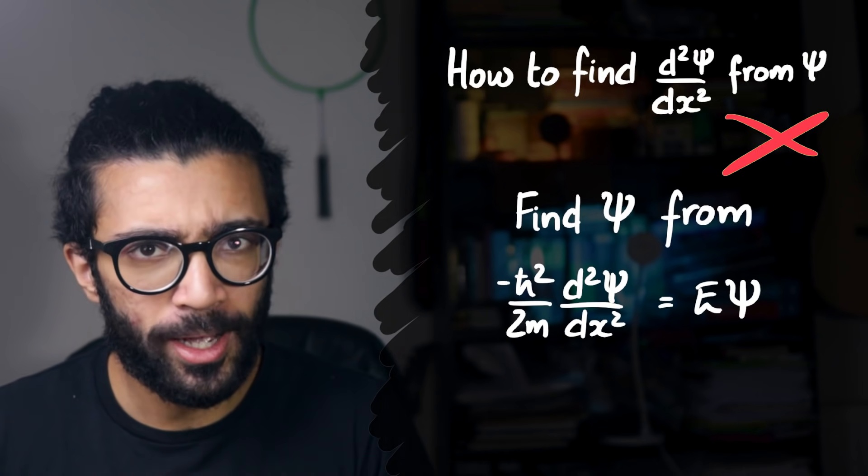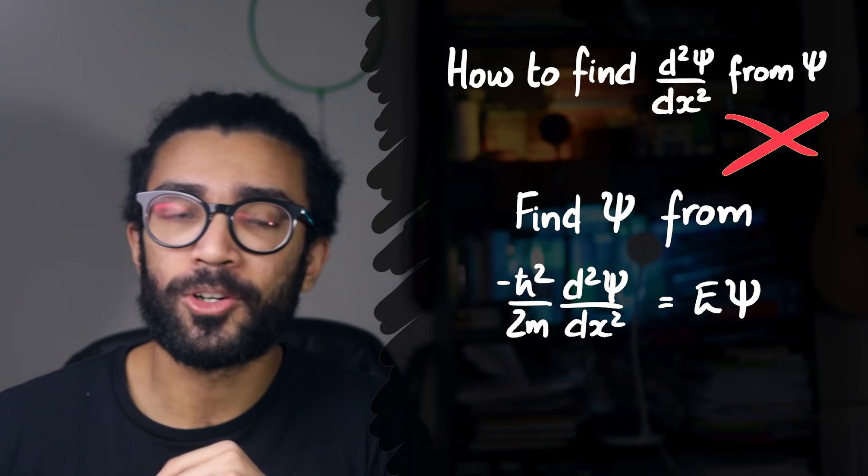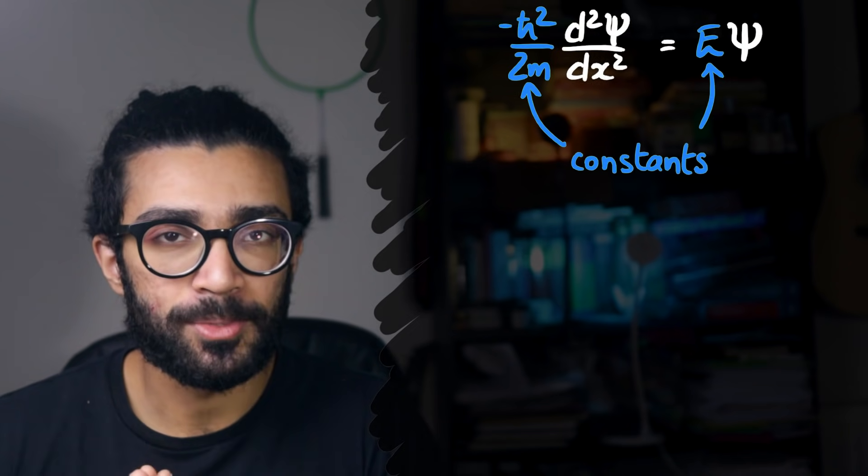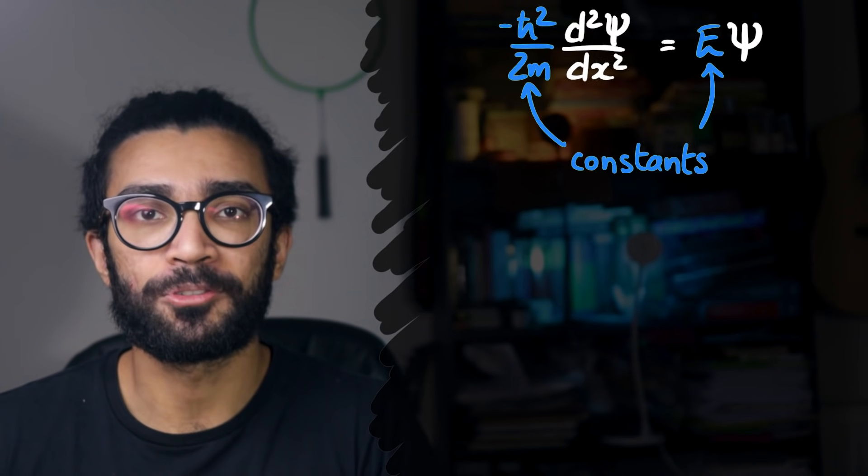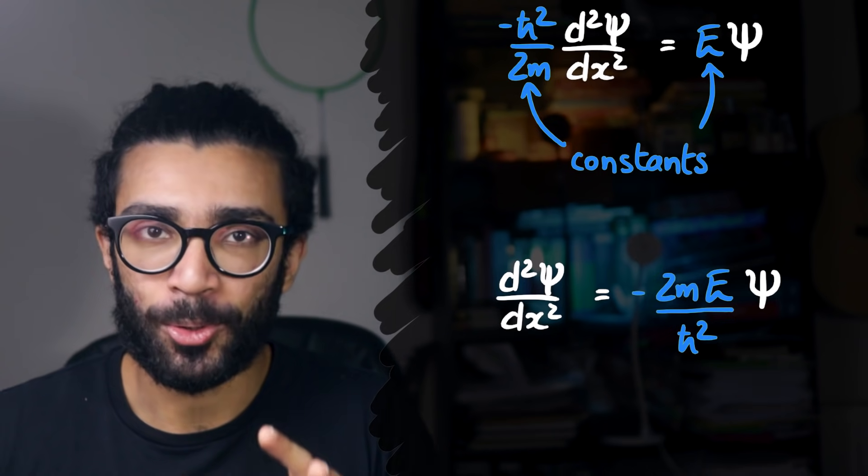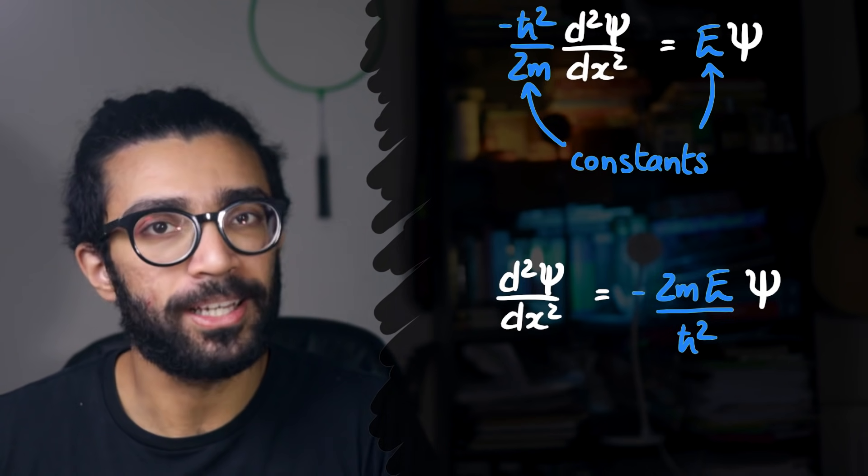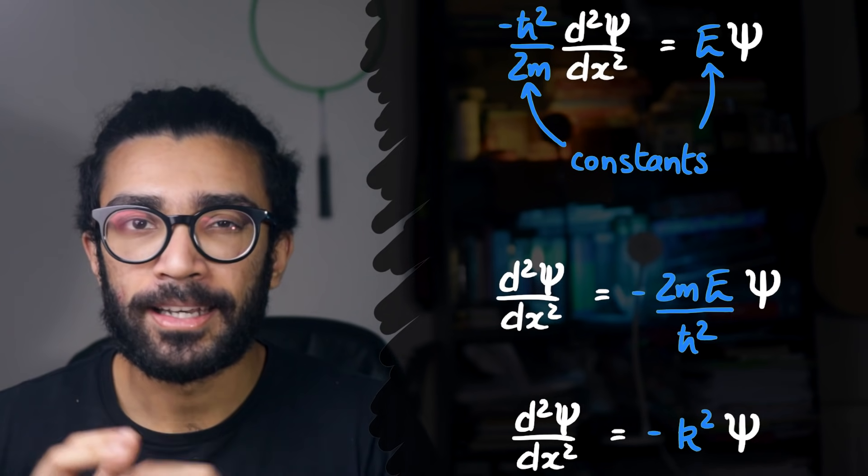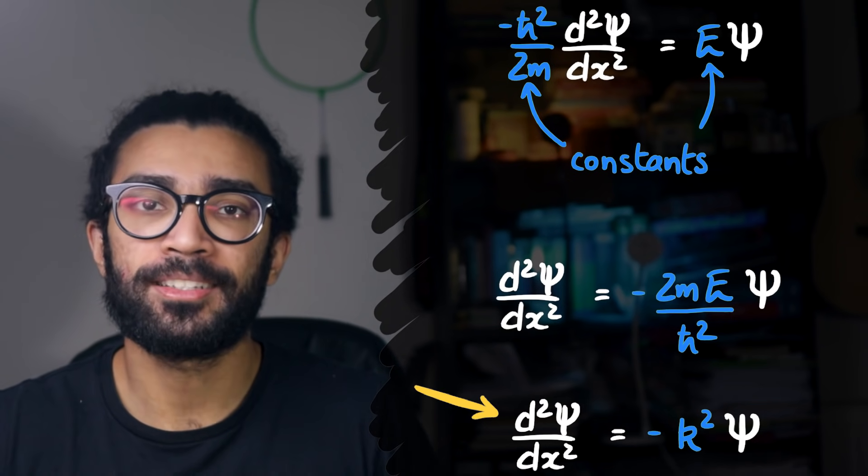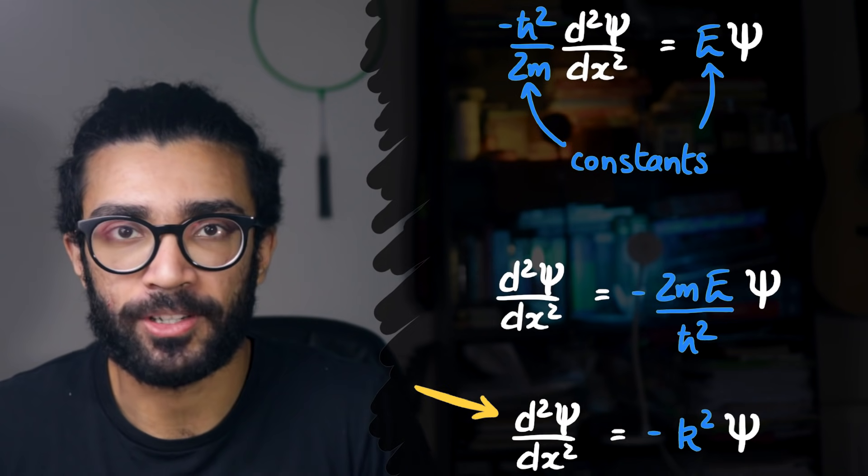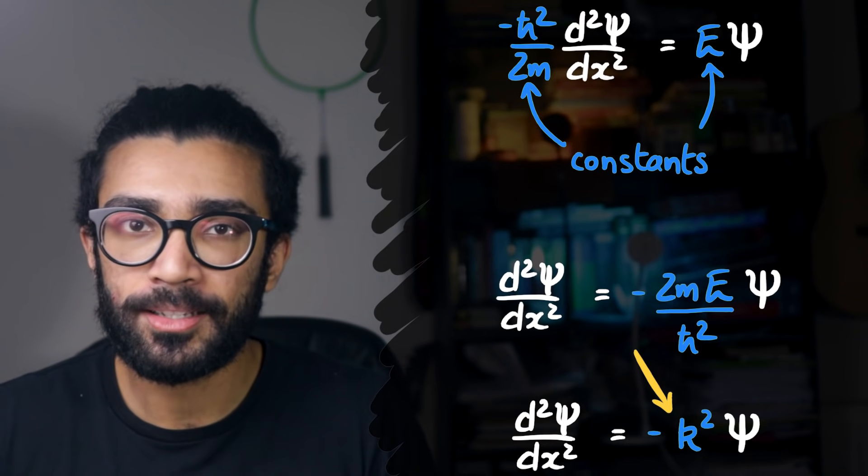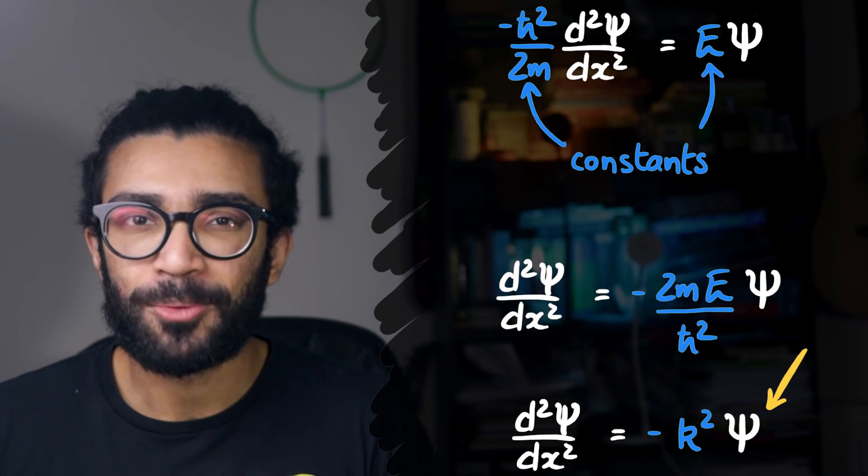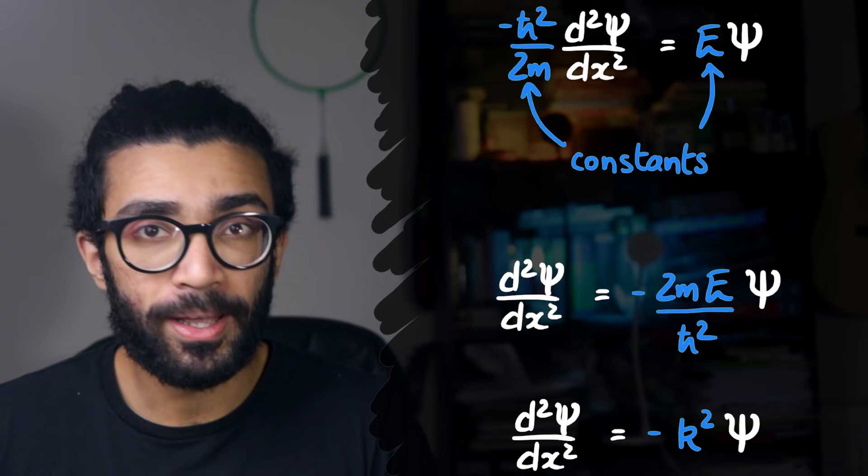But that's not the case here. We're trying to go the other way, which is much trickier. And we've got this e psi term to deal with as well. Luckily, however, all of these terms are constant, and we can rearrange our equation so that we're left with this. We can then combine all of the constants into one nice big constant, which we'll call k squared for now. You'll see why k squared and not just k later. And at this point, what we've got is that the second derivative of whatever our wave function psi is, is equal to minus some constant k squared multiplied by our wave function.